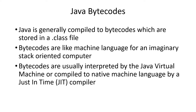Java is compiled by the Java compiler into bytecodes, which are stored in a .class file. Bytecodes are sort of machine language for an imaginary stack-oriented machine. They aren't really executed by the hardware — they are interpreted by your Java virtual machine, or the JVM may directly compile the bytecodes into native machine language like Intel assembler and then execute that.